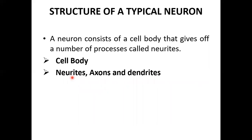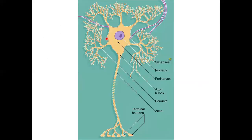A neuron consists of a cell body, an axon, and dendrites. The cell body contains the nucleus and nucleolus. The dendrites are branching, tree-like processes that receive impulses. The axon is a long, slender single process that ends in terminal boutons, where synapses are formed.